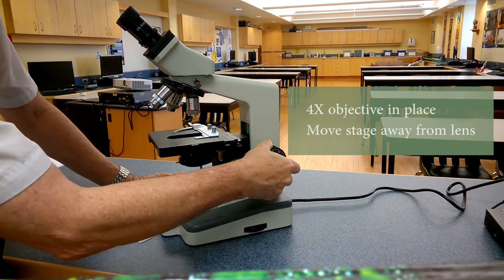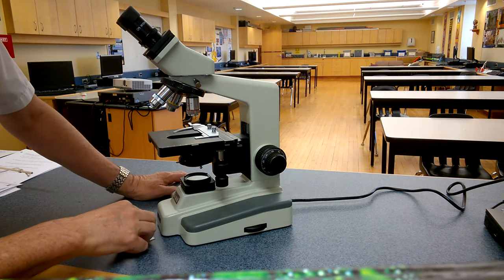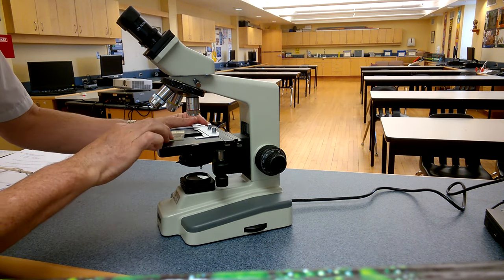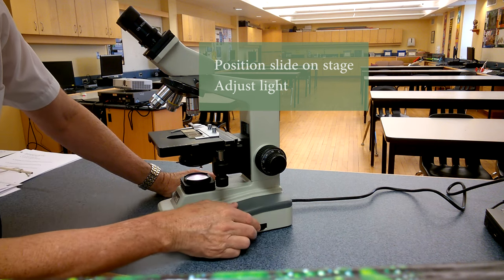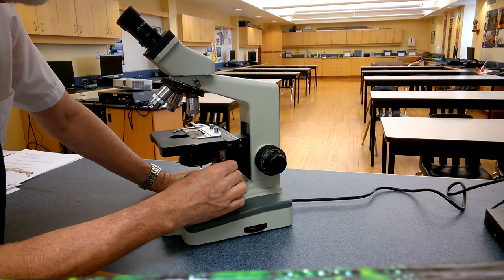Move the stage so that it's as far away from the objective as possible. Now you can place your slide on the stage, turn on your light, and adjust the position of the slide so that your specimen is in the light path.